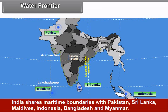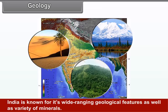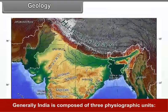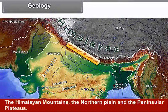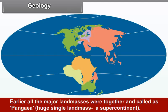India is bounded by the Arabian Sea in the west and south-west, the Bay of Bengal in the east and south-east, and the Indian Ocean in the south. Kanyakumari is the southern tip of the Indian peninsula. Sri Lanka is separated from India by the Gulf of Mannar and the narrow channel of Palk Strait. India shares maritime boundaries with Pakistan, Sri Lanka, Maldives, Indonesia, Bangladesh and Myanmar.